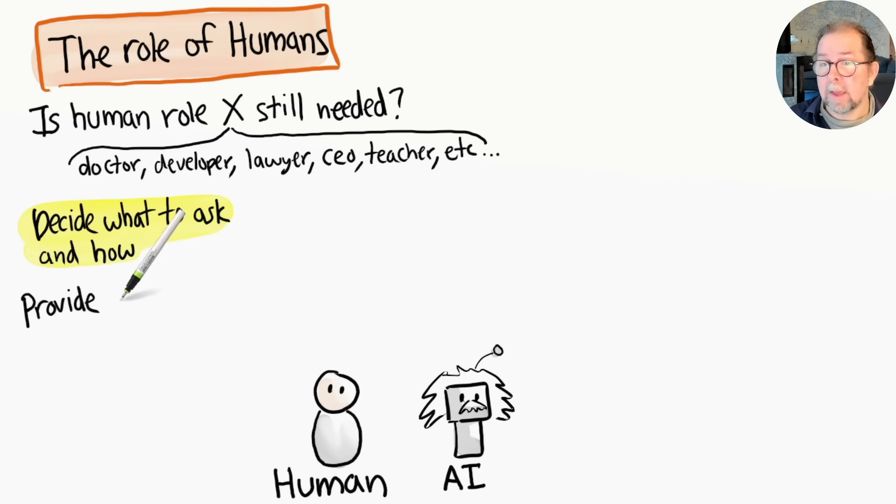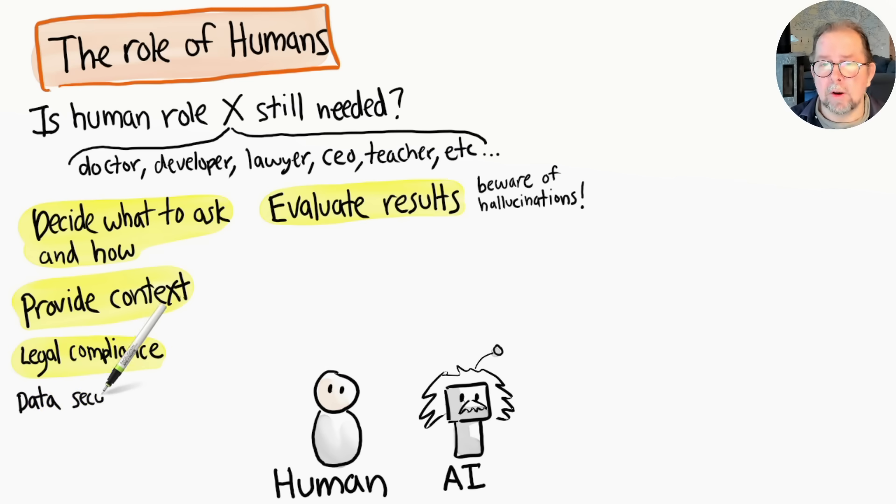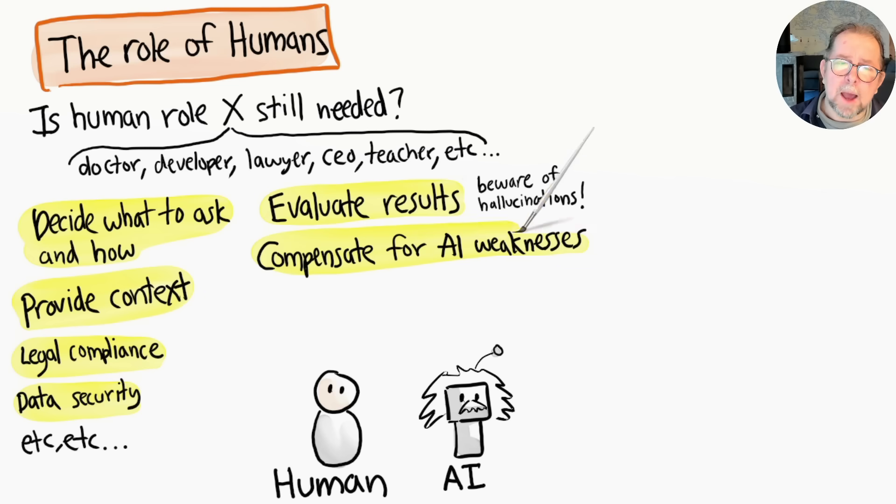Someone with domain knowledge still needs to decide what to ask the AI, how to formulate the prompt, what context needs to be provided, and how to evaluate the result. AI models aren't perfect—they can be absolutely brilliant sometimes, but sometimes also terribly stupid. They can sometimes hallucinate and provide bogus information in a very convincing way. So when should you trust the AI response? When should you double-check or do the work yourself? What about legal compliance, data security? What information can we send to an AI model, and where is that data stored? A human expert is needed to make these judgment calls and compensate for the weaknesses of the AI model.